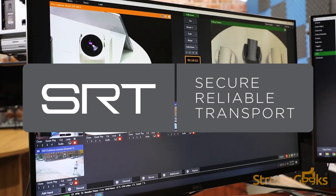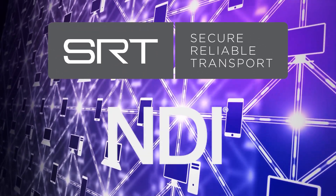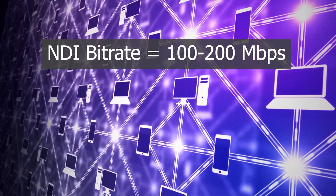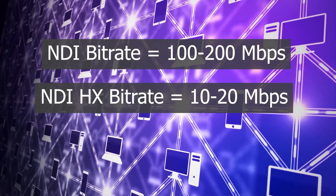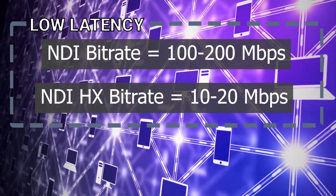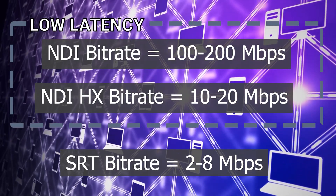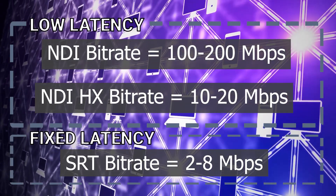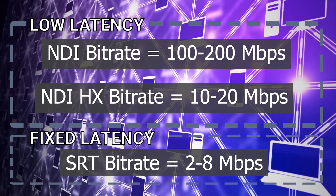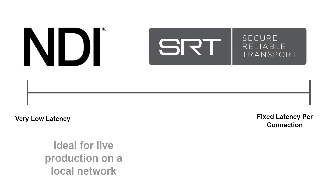SRT makes it possible to remotely receive video from almost anywhere in the world that has sufficient internet access. Comparing NDI and SRT, you will notice a big difference in video bitrate and latency. NDI, for example, can feature bitrates up to 100 to 200 megabits per second. NDI-HX, or high-efficiency video streams, are usually between 10 to 20 megabits per second. NDI features low-latency video streaming, which is ideal for live video production. On the other hand, SRT video streams are usually lower bitrates — between 2 to 8 megabits per second — because they leverage connectivity over the public internet. SRT video streams offer fixed latency options, which are greater than NDI, but they make remote video production for multiple cameras possible over the public internet.